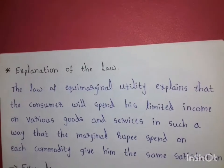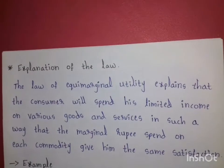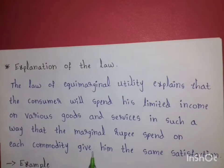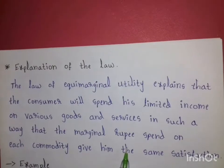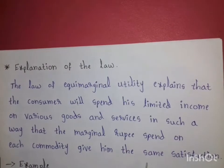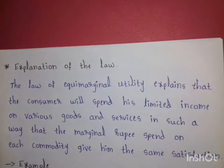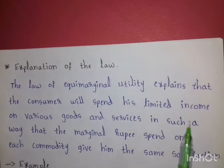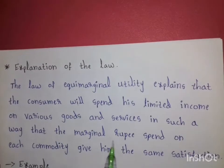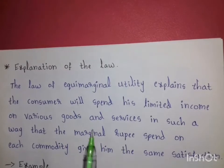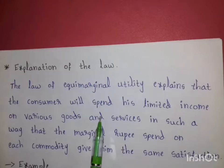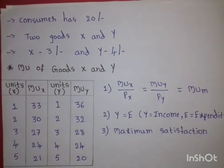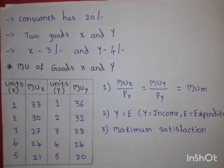The law of equi-marginal utility states that the additional satisfaction obtained from each additional rupee spent should be equal, and this is how the consumer distributes his limited income across various goods and services. It can be explained with the following table.